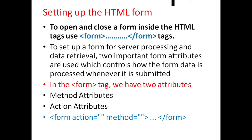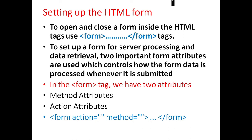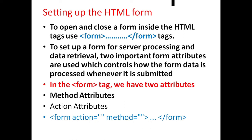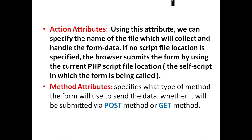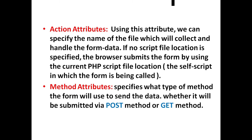To open and close a form inside HTML, use the form and slash form tags. To set up a form for server processing and data retrieval, two important form attributes are used which control how the form data is processed when submitted. These two attributes are the method attribute and the action attribute. Using the action attribute, you can specify the name of the file which will collect and handle the form data. If no script file location is specified, the browser submits the form using the current PHP script file location. The method attribute specifies what type of method the form will use to send the data, whether it will be submitted via POST or GET method.